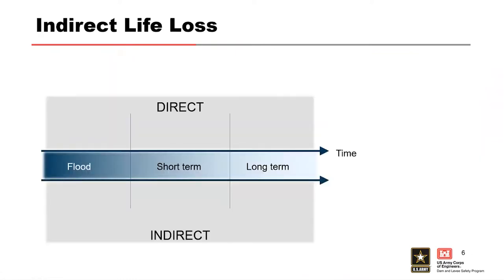When we're talking about indirect life loss with our developed method, we're really looking at during the flood and the short-term period after — about three months after. During the flood, direct causes include drowning, collapse of structure, accidents with medical equipment, and power problems.